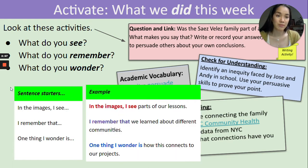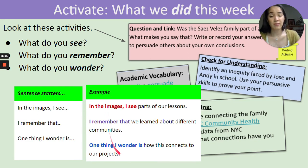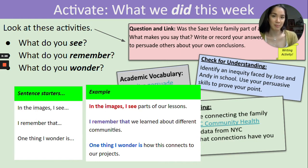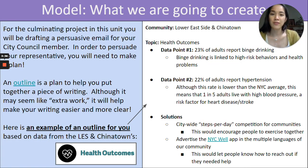One possible way to differentiate is to provide an example. Here's one: 'In the images I see parts of our lessons; I remember that we learned about different communities,' and so on. You can present this model to students before they begin the See, Remember, Wonder exercise independently, or when they share their ideas during discussion. Either way, it gives students a clear example of what they're aiming toward with the activation activity.